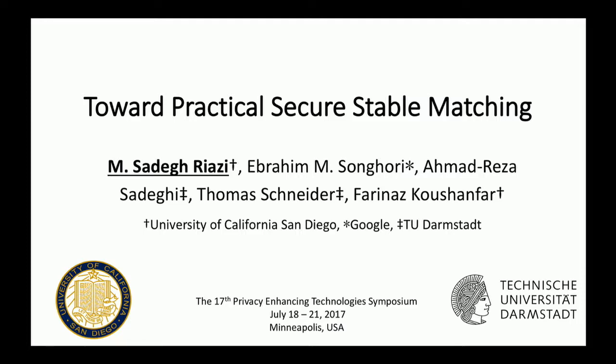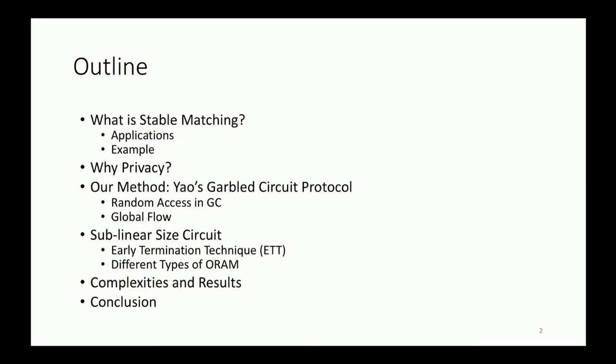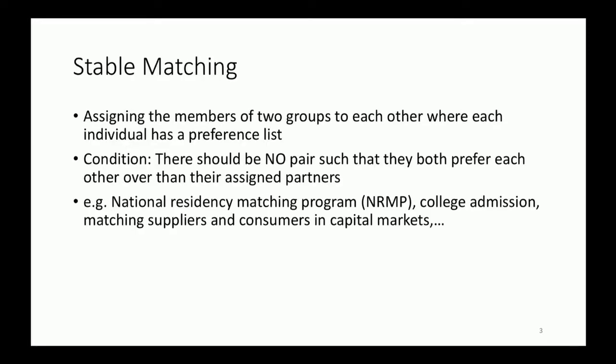This is the outline of my presentation. First I'm going to talk about what is stable matching, followed by a visual example, then I will talk about why we need privacy in this task. Then I will talk about Yao's garbled circuit protocol which we have utilized in our solution. The majority of my talk is dedicated to our two main contributions: the first one is a linear size circuit and the next one is early termination technique. I will compare the complexity of our computation with prior work and we have done extensive experimental results which I will provide at the end.